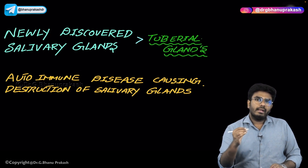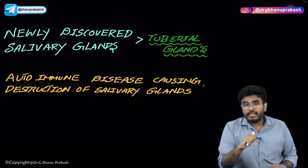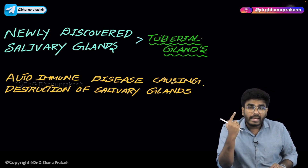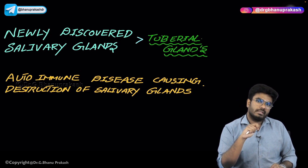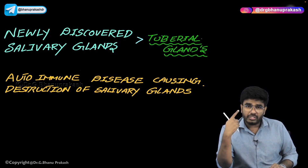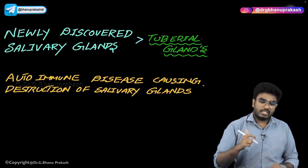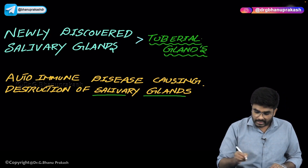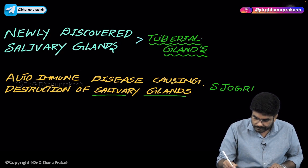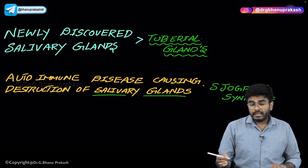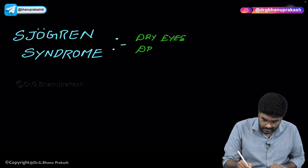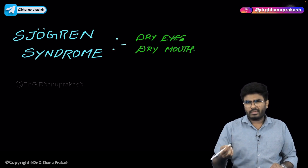Let's take a condition where a person is producing antibodies that are destroying the salivary glands. These antibodies are also going to the lacrimal glands and destroying them too. If both the salivary glands and lacrimal glands are under attack and get destroyed, there will be dry mouth and dry eyes. This condition, involving autoimmune destruction of both salivary glands and lacrimal glands, is called Sjögren's syndrome. The clinical features are dry eyes and dry mouth, and it is commonly seen in females.